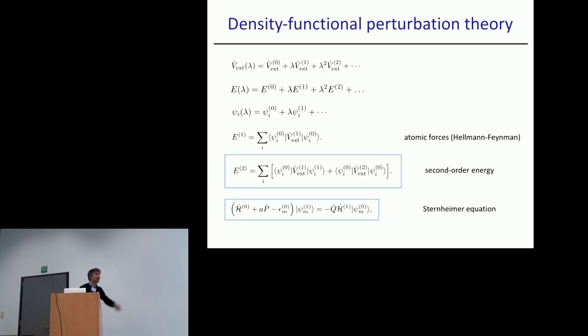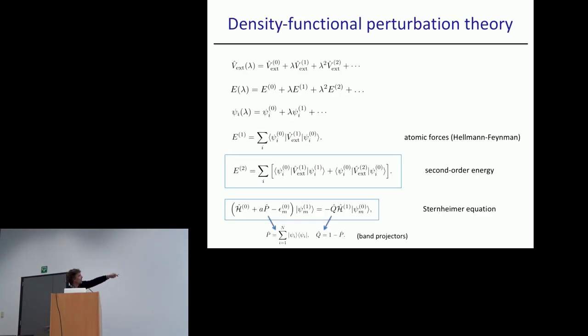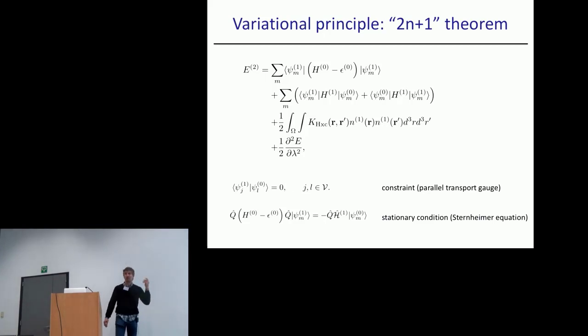These first order wave functions are given by the Sternheimer equation that you all know. What I want to emphasize is that this second order energy can be written as a variational functional of the first order wave function. This is nice because I can be sure that this is a variational minimum, a constrained variational minimum with respect to psi one. I emphasize constrained because for this problem to be well defined, I need to impose the parallel transport gauge on the first order wave functions to make sure they are orthogonal to the valence manifold.